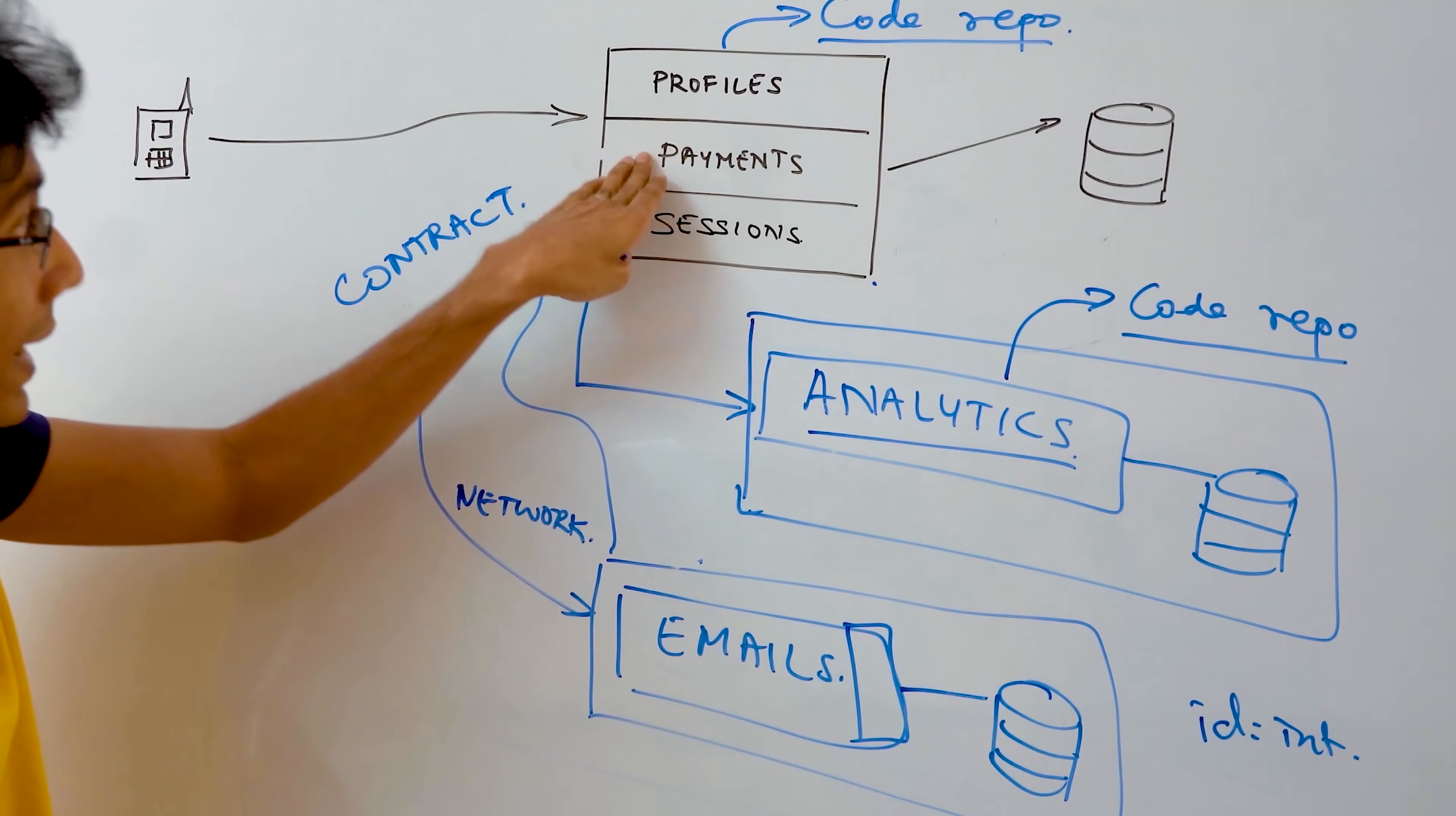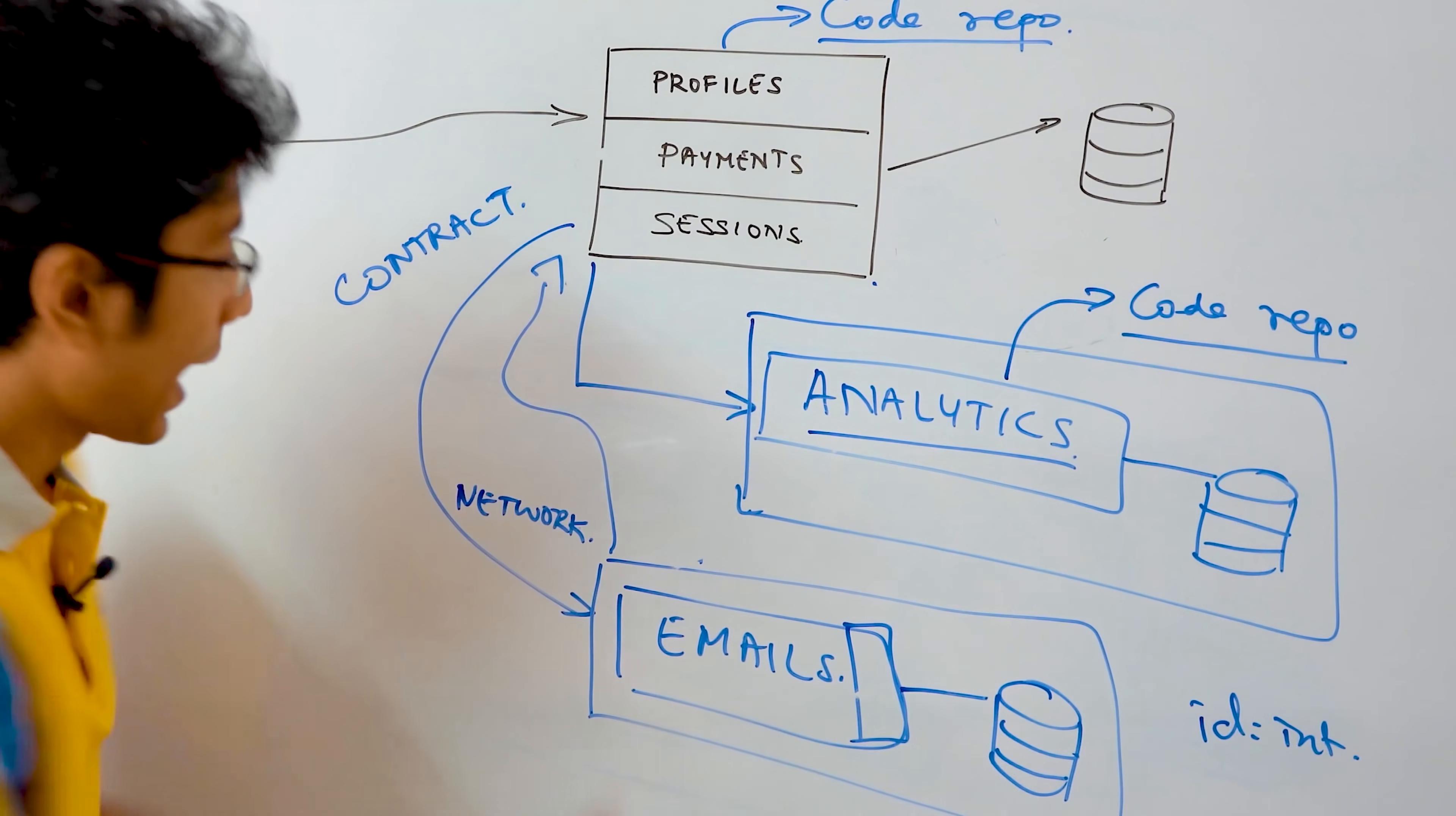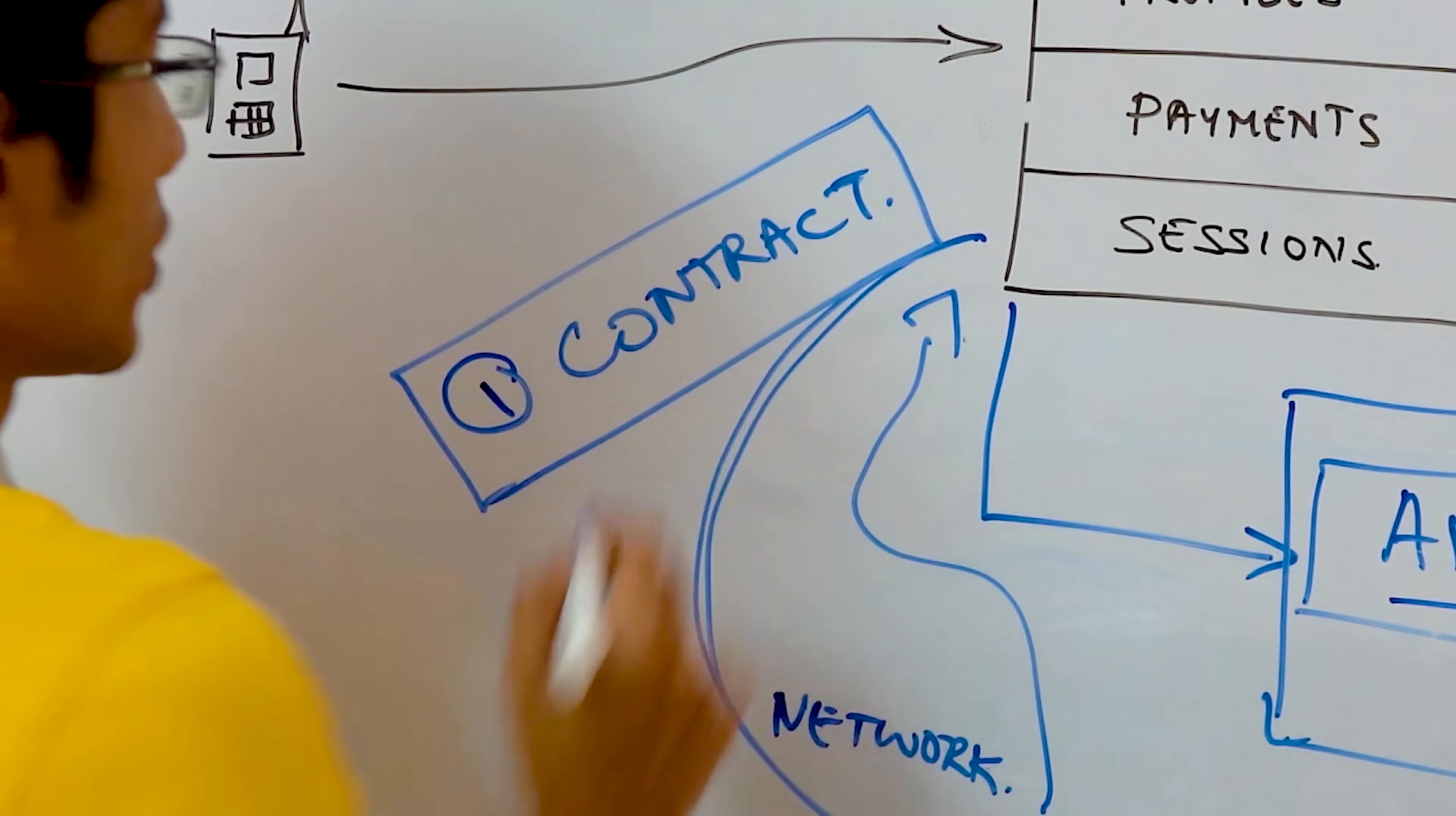And whenever an external service wants to call a function over here, it has to read this contract, construct an object as per requirement, and then send the request over the network. That's the important thing. So the first change that we need is that we need to define contracts for each microservice.